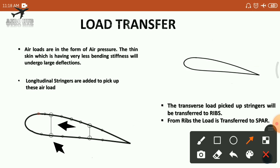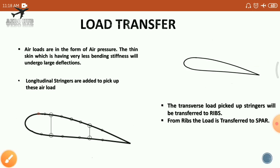From the lower spar cap, the load is transferred back to the ribs, then stringers, then the skin, and finally to the fuselage section. A wing acts as both a bending member and a torsion member. In the case of torsion, the spar web and skin act as shear or torsion members, while the stringers and spar cap act as bending members. That concludes this lecture on load transfer, and in the next lecture we will discuss different sizing procedures.